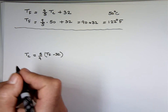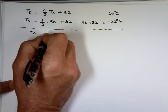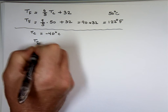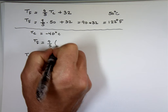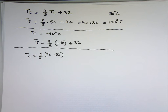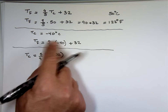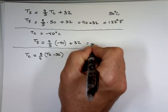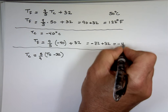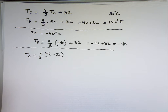I went to Quebec City one time and the temperature was negative 40 degrees Celsius. Let's convert: (9/5) × (−40) + 32. Negative 40 divided by 5 is negative 8, times 9 is negative 72, plus 32 gives negative 40. That's actually the only temperature where Celsius and Fahrenheit scales match — minus 40 degrees is the same in both Celsius and Fahrenheit.